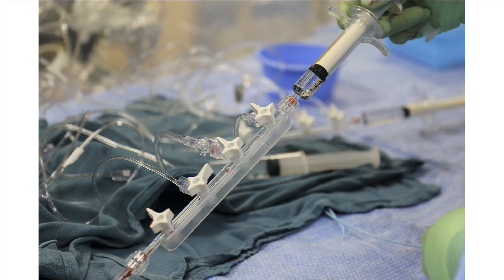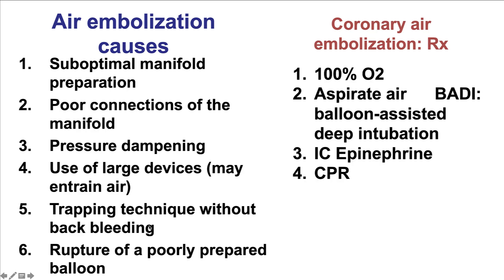During injections, the manifold and syringe should be held in a vertical position. By doing so, any potential micro-bubbles will go to the top of the syringe and would not be injected through the lines into the coronary artery. Careful preparation of the manifold and keeping it in a vertical orientation during injection can help minimize the risk of air entering into the catheter and into the coronary artery.